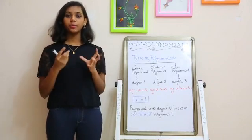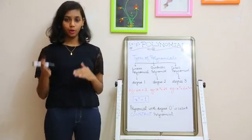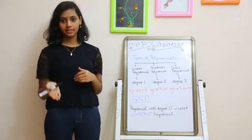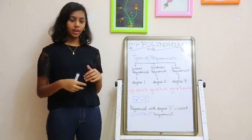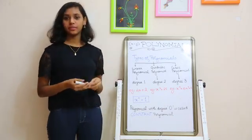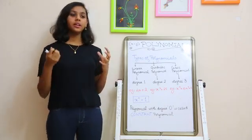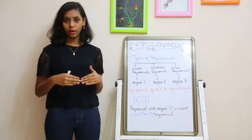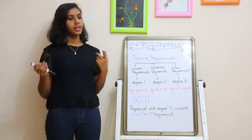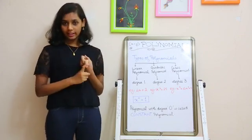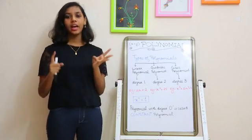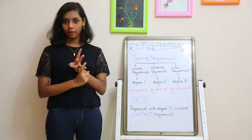We learned about how a polynomial is formed and what a polynomial consists of. Now we are going to learn about the types of polynomials: linear polynomial, quadratic polynomial, and cubic polynomial.